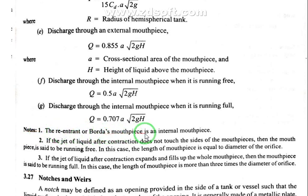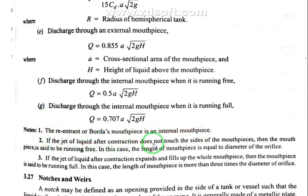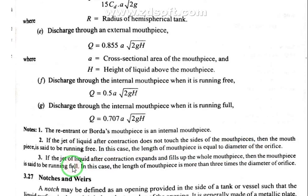Note: First, a re-entrant or Borda mouthpiece is an internal mouthpiece. Second, if the jet of liquid after contraction does not touch the sides of the mouthpiece, then the mouthpiece is said to be running free — in this case the length of the mouthpiece is equal to the diameter of the orifice. Third, if the jet of liquid after contraction expands and fills up the whole mouthpiece, then it is said to be running full — in this case the length of the mouthpiece is more than three times the diameter of the orifice. Next, we will look at notches and weirs.